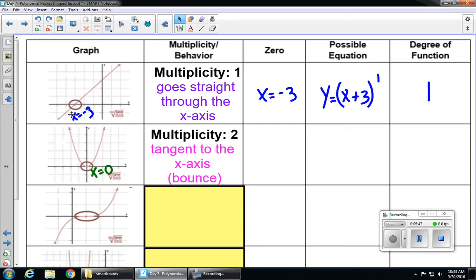It's tangent to the x-axis. It touches once but doesn't cross through. And it has a bounce. So whenever we see something like this, which we're going to call a bounce, we know that it has a multiplicity of 2.